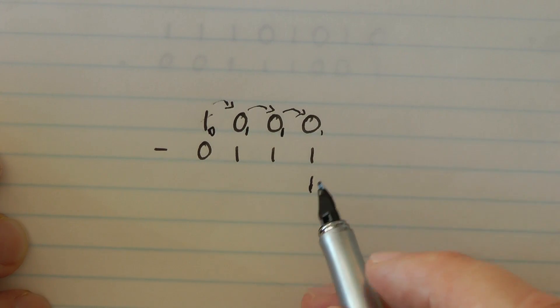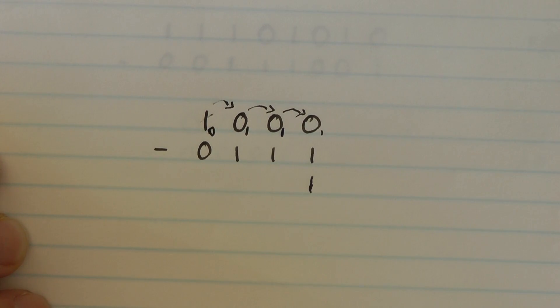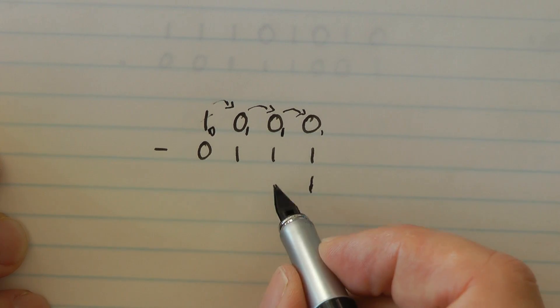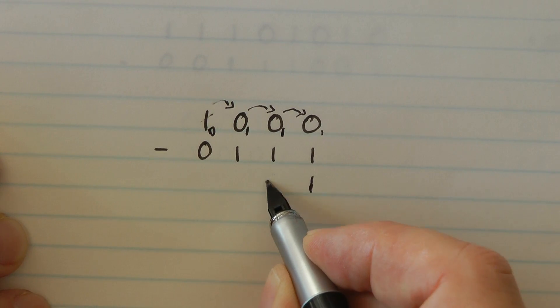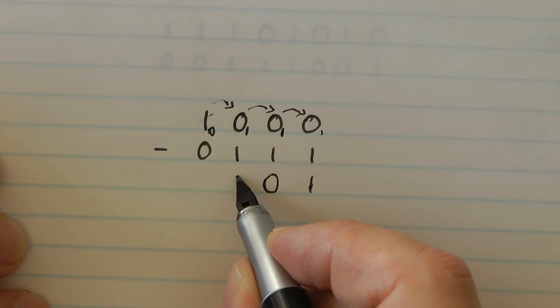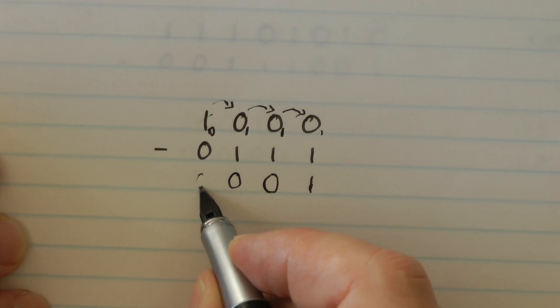Now the rule does say 1 and a borrow. I've already put my 1 here so I don't need to worry about the first column. It's now done. The second column becomes 1 minus 1 which is 0. Then 1 minus 1 is 0 and the fourth column 0 minus 0 is 0.